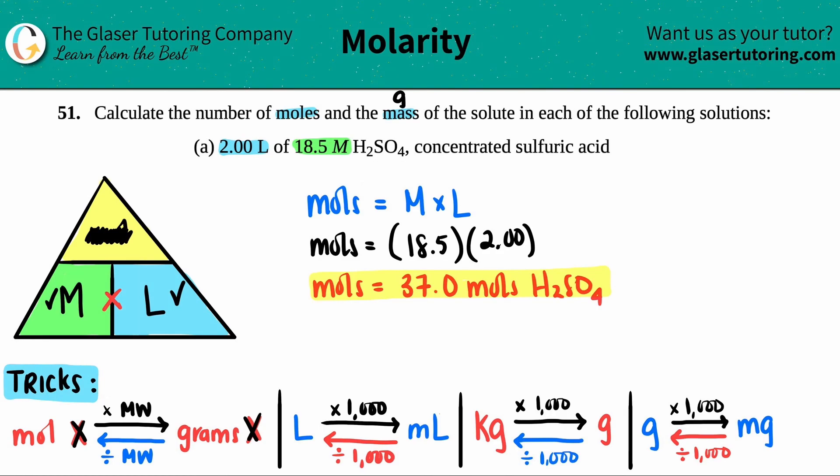All you have to do is take that mole value and multiply it by the molecular weight or the molar mass or the molecular mass. It's basically the amount on the periodic table. So what we're going to do is we're going to take the 37.0 moles of H2SO4 and we're just going to multiply it.